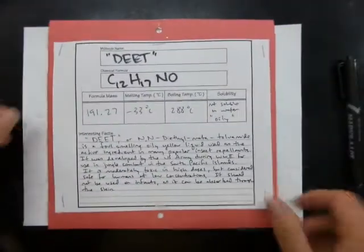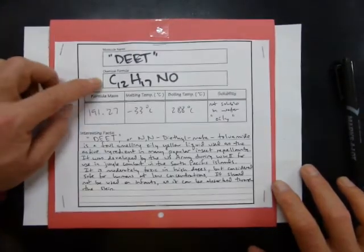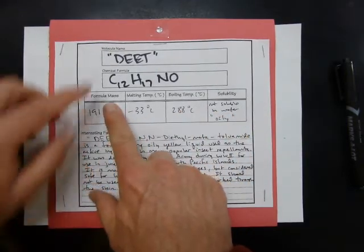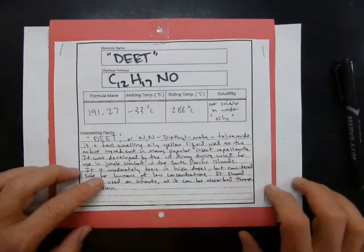And then on the flip side, I wrote out a little poster explanation of my compound, its name, its formula. I looked up some of this information. I just did a Google search, formula mass of DEET, melting temperature of DEET, and so on. I found out its solubility.